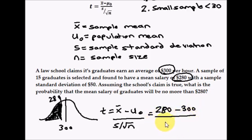Divide by S, the sample standard deviation, that was 50. And we're going to divide by the square root of 15. That's the number of graduates in the sample.